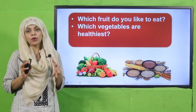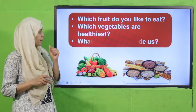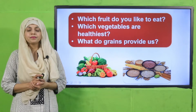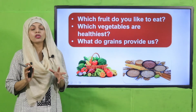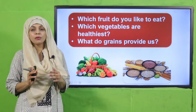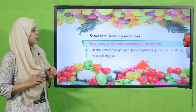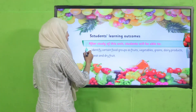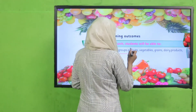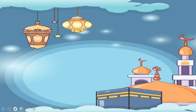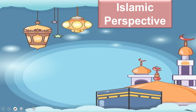What do grains provide us? They provide us with lots and lots of energy because they have carbohydrates in them. Today we will identify certain food groups as fruits, vegetables, and grains.